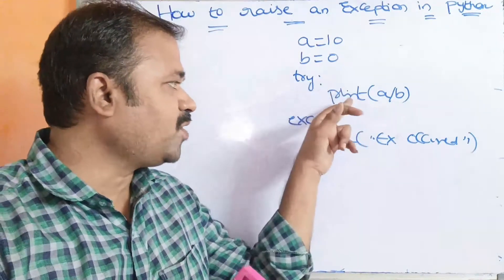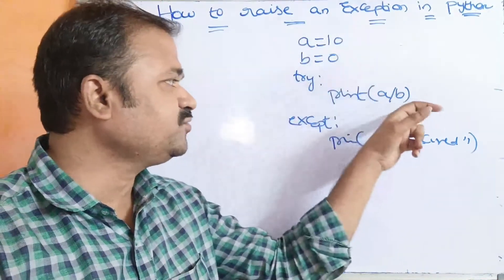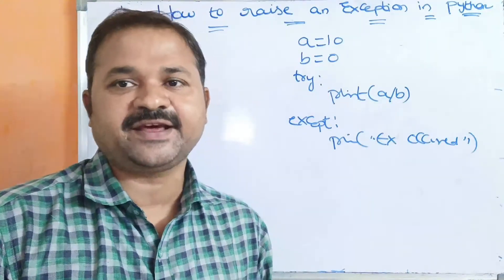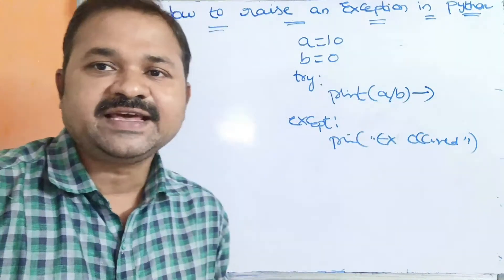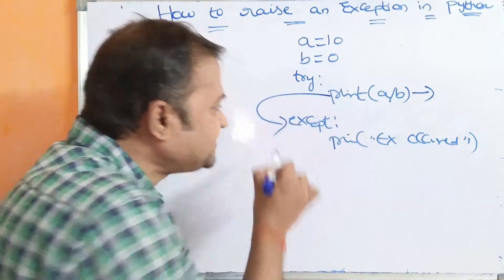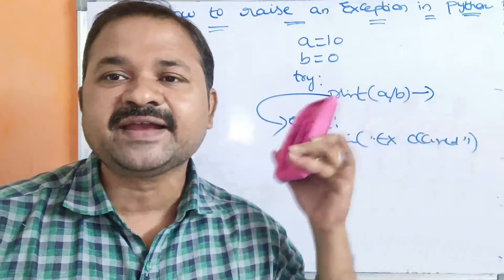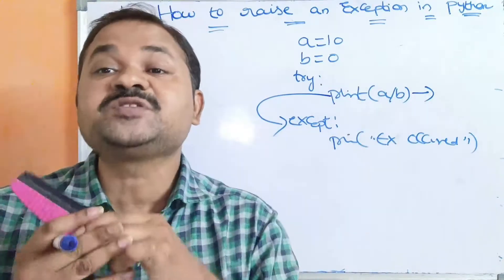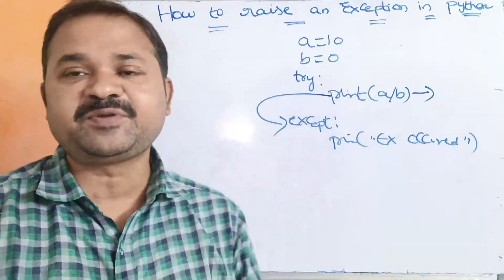In the try block, we have print of a divided by b. a is 10 and b is 0 — this is a ZeroDivisionError. Whenever an exception occurs in the try block, that exception will be thrown to the except block. This is done implicitly by the Python interpreter; we are not throwing the exception ourselves. It is the responsibility of the Python interpreter to throw the exception to the except block.